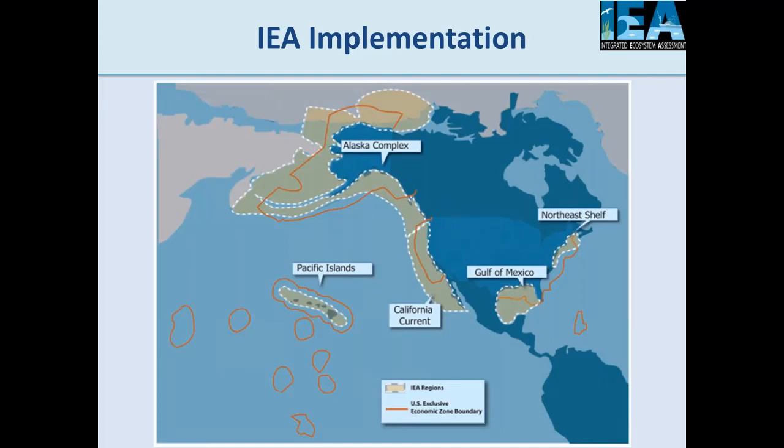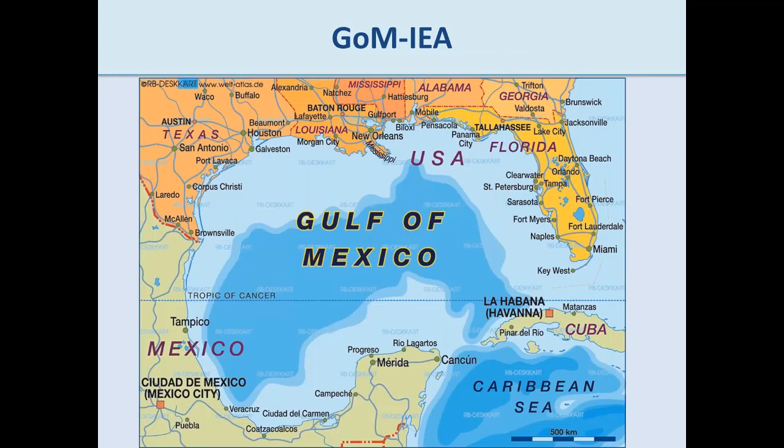Within NOAA, we've been implementing integrated ecosystem assessments across the country. We have five active IEA regions: Pacific Islands, California Current, Alaska, Northeast Shelf, and the Gulf of Mexico. I'll be talking exclusively about the Gulf of Mexico, but this work is building off of and coordinating with other regions across the country.